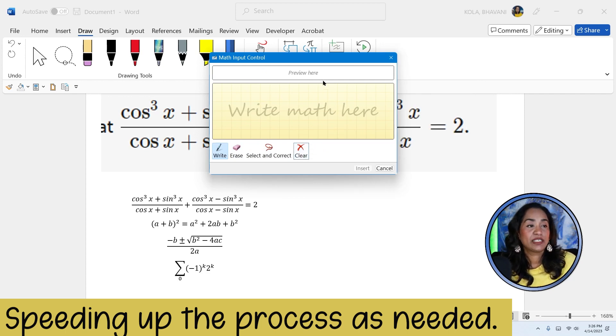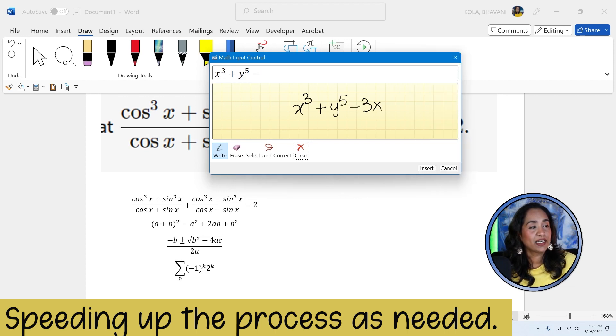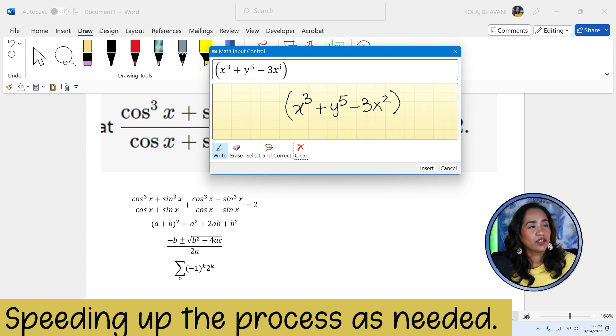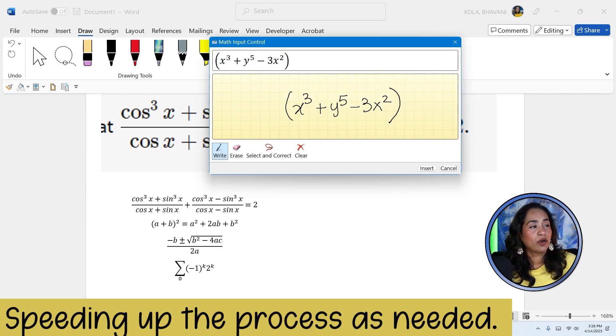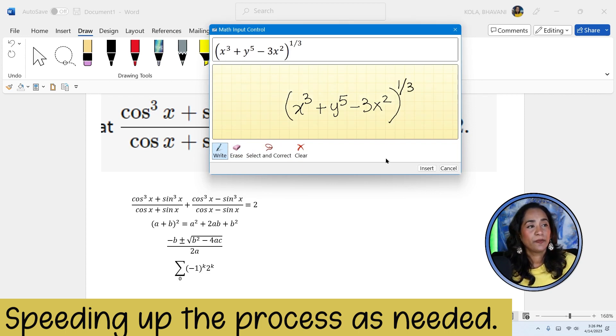So let me clear this. And let's just say I am writing x cubed plus y power five minus three x squared, the whole to the power. That's not an i to the power. Let me erase that little thing there. It automatically takes it to be an i. So to the power, let's just say it's one over three. There you go. It's so simple.